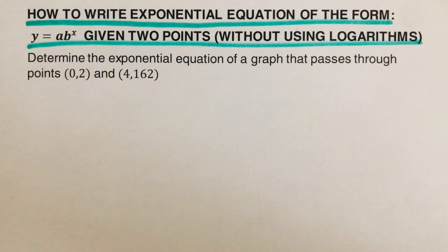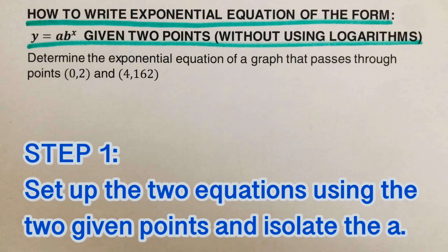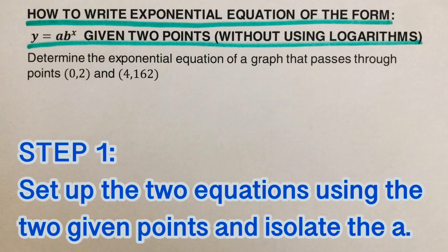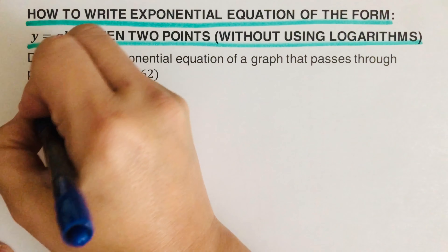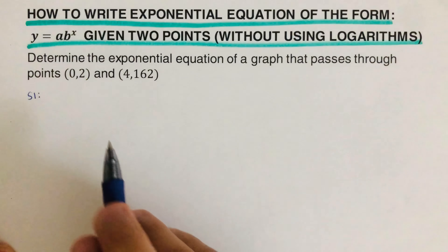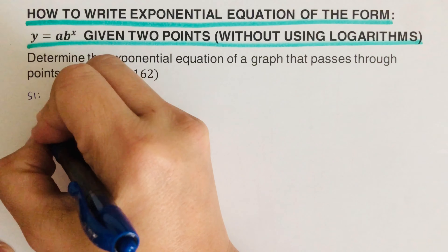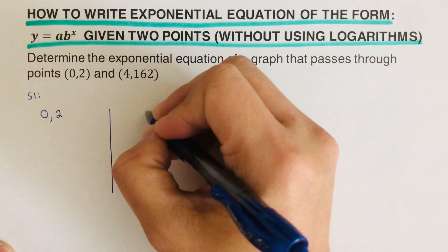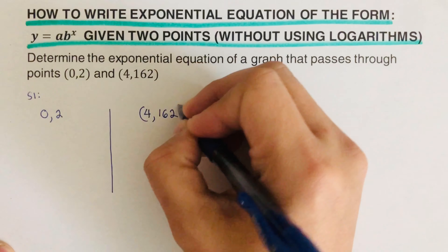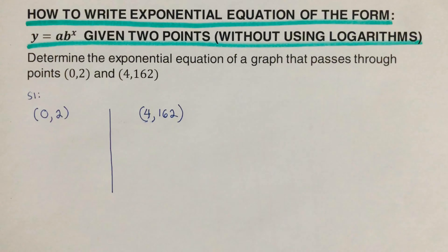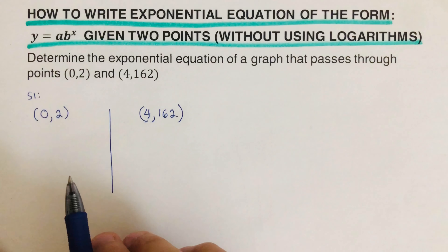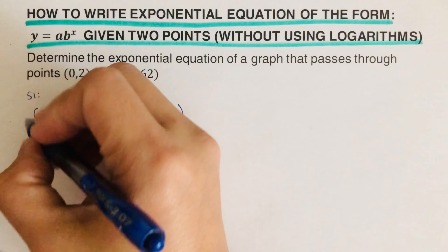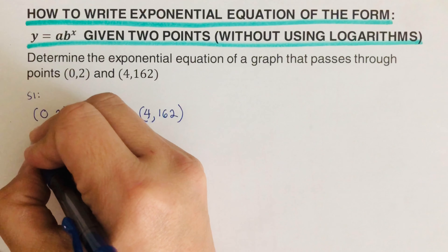There are steps we need to follow to solve this kind of problem. Step one is to set up the two equations using the two given points and isolate the a. I'll go ahead and label this as step one. I will set up the two equations using these two given points and use the equation y equals ab raised to the power x.